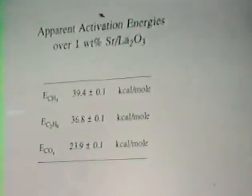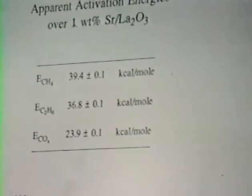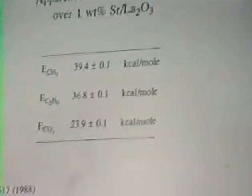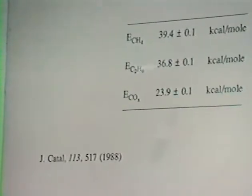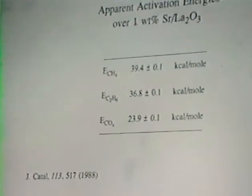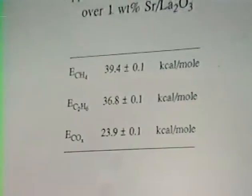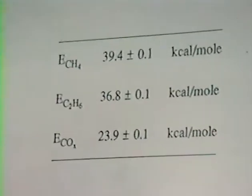Now from these slopes, we can plot up the data in an Arrhenius plot and get the parent activation energies. And what I want to point out to you here is that the parent activation energy for the coupled product versus the COX are different. And based on our understanding of how the methane is broken apart and then subsequently coupled to C2 products, we can conclude from this large difference in activation energy that the carbon oxides and the coupled products are obtained by separate and independent pathways on the catalyst surface.